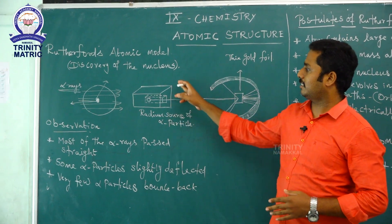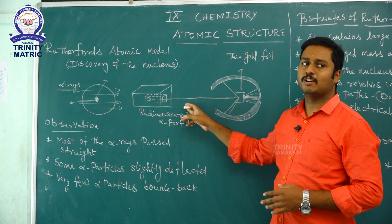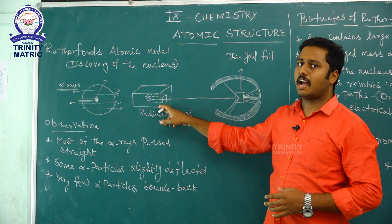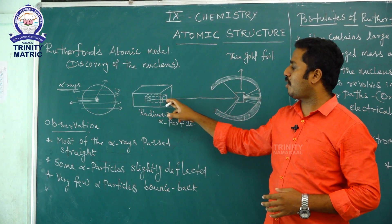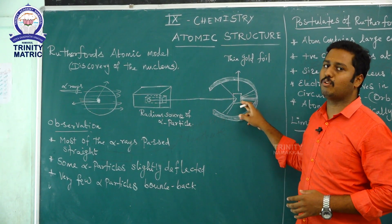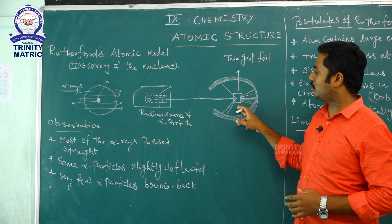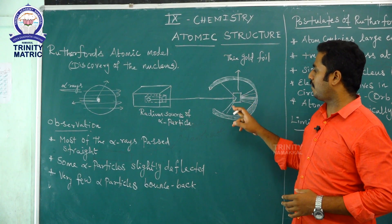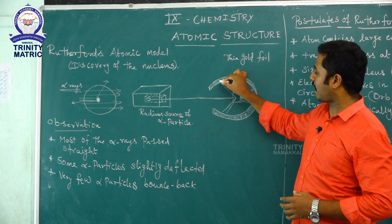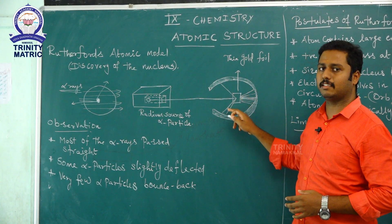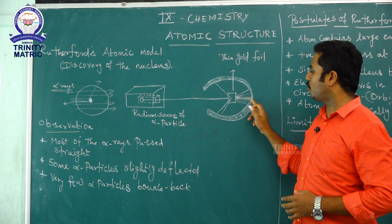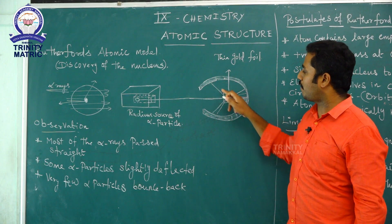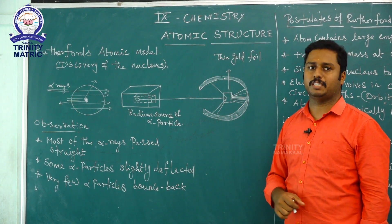In the apparatus used by Rutherford, he took a radium source as an alpha particle generator and passed a beam of alpha particles over the thin sheet of gold foil. After the alpha particles fell on the gold foil, some of them were deflected while most went in a straight line.